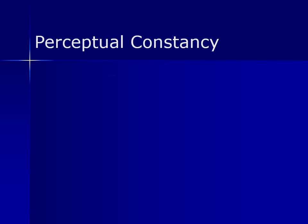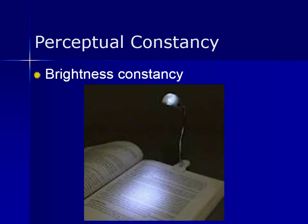With brightness constancy, the relative brightness of objects remains the same under different conditions of illumination — whether full sunlight or shade, or somewhere in between. So a familiar object will appear the same color regardless of the amount or color of light reflecting from it. The amount of light that enters the eye changes dramatically, but the appearance of the brightness or lightness of the paper and ink changes very little. This is an important constancy that allows us to recognize objects in a wide range of light conditions.